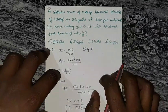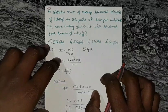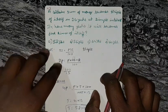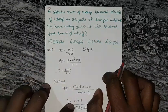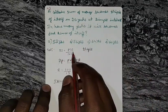Question number 52: A certain sum of money becomes triple of itself in 26 years at simple interest. In how many years will it become five times of itself? Simple interest is equal to PTR by 100.